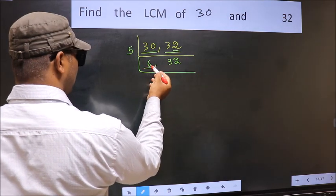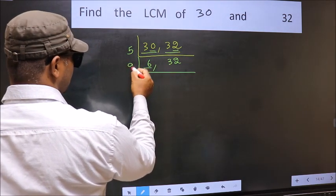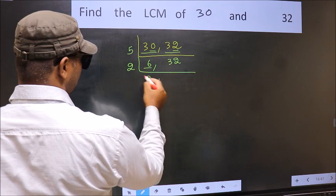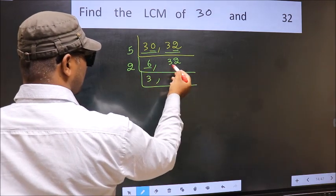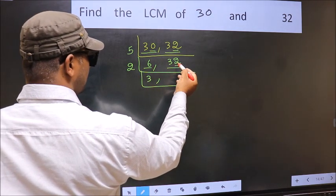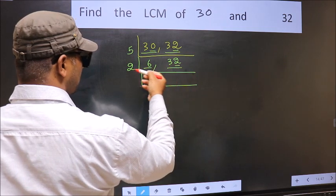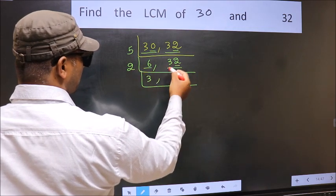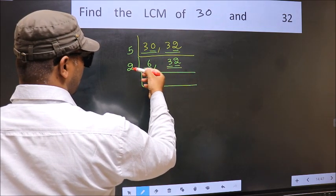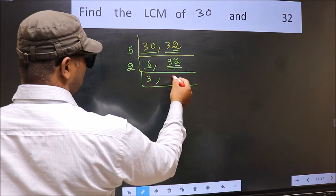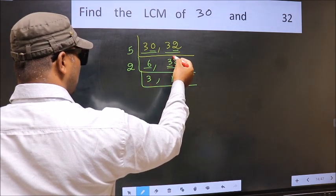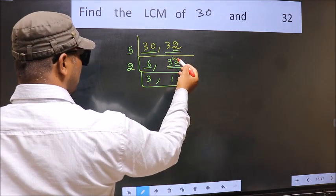Now here we have 6. 6 is 2 times 3. The other number is 32 — last digit 2, so it is divisible by 2. For the first number 3: the closest number to 3 in the 2 table is 2. 3 minus 2 is 1, carried forward to give 12.